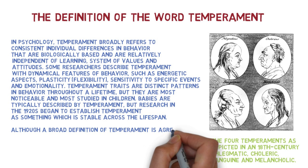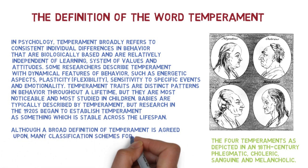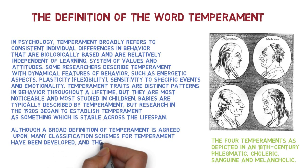Although a broad definition of temperament is agreed upon, many classification schemes for temperament have been developed and there is no consensus. In the picture you see four temperaments depicted in the 19th century: starting with the upper left — phlegmatic, then choleric, sanguine, and melancholic.